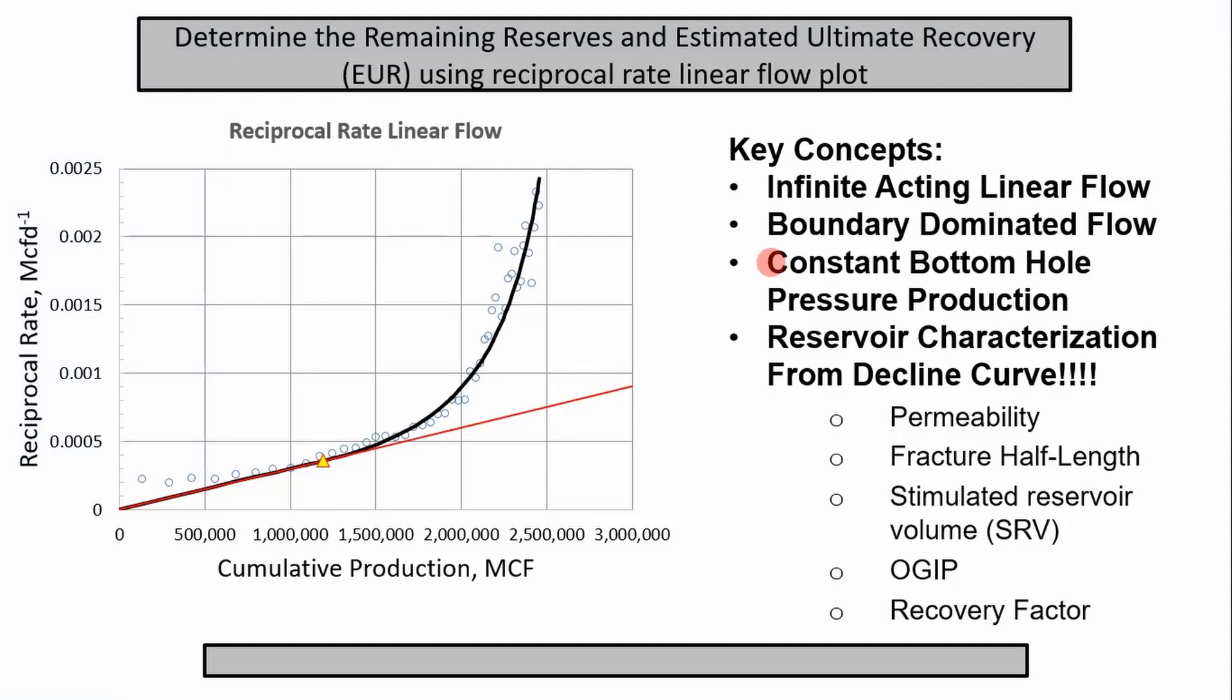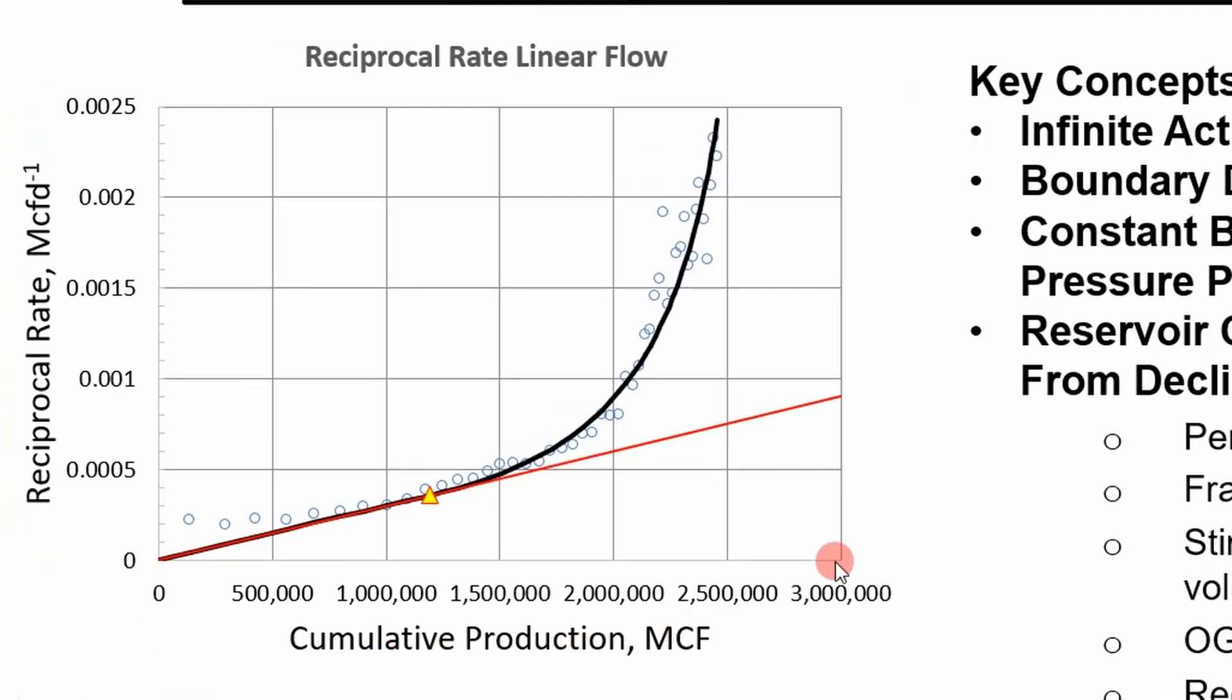Today we're going to determine the remaining reserves and estimated ultimate recovery using the reciprocal rate linear flow plot. So a reciprocal rate linear flow plot is used as a basis to determine the estimated ultimate recovery of hydraulically fractured wells. This can include vertical wells and also hydraulically fractured horizontal wells. The only emphasis is that we're assuming that the well is fractured and it's exhibiting linear flow.